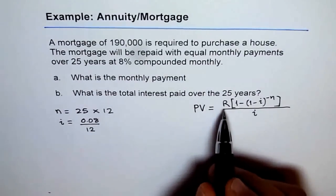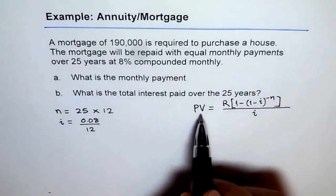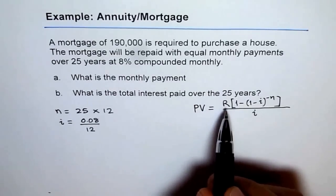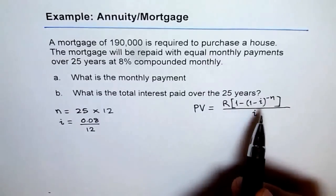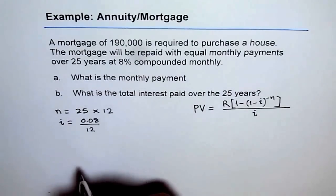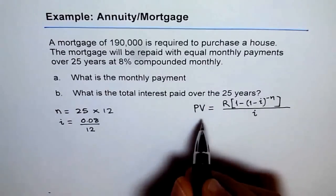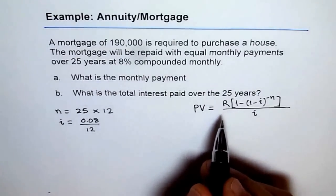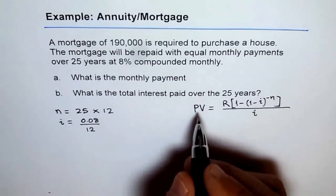In the formula, you see, you know all the terms. You know PV, the present value. R is what you need to find. I is what this is. And N is this value. So you have to plug in these values and find R.